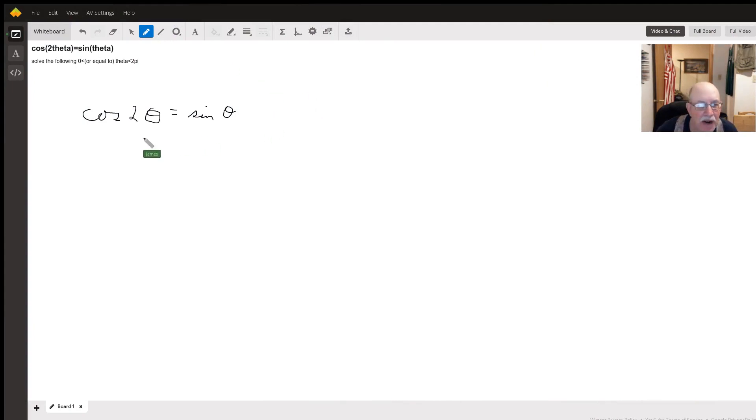To start this problem, we're going to rewrite cosine of 2 theta in terms of sine using the double angle formula for cosine: cosine 2 theta equals 1 minus 2 sine squared theta.